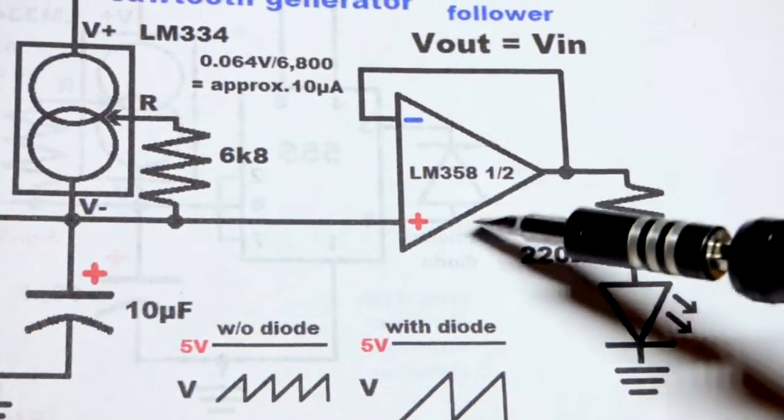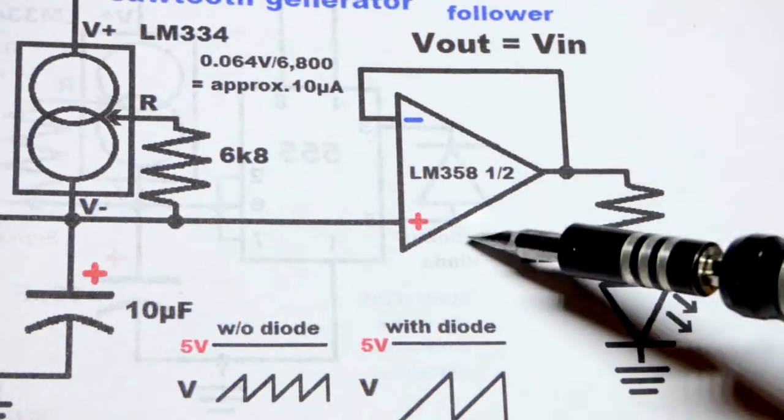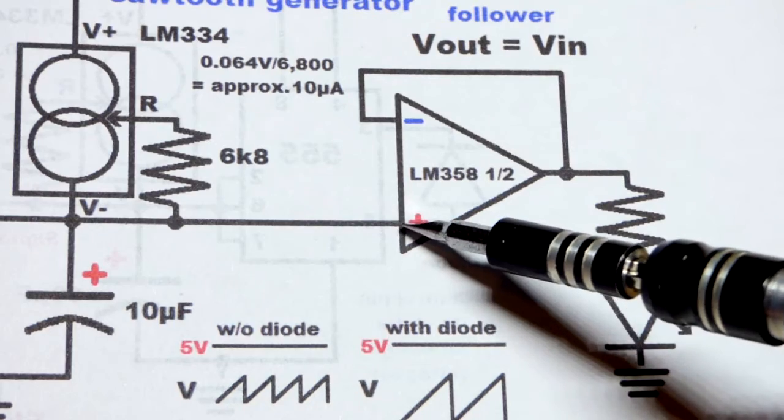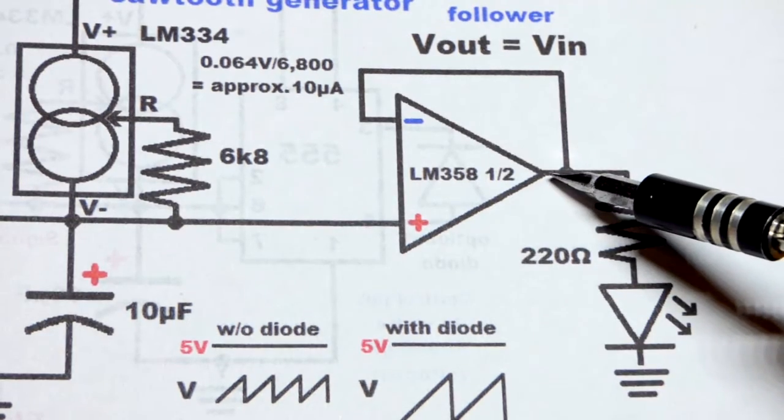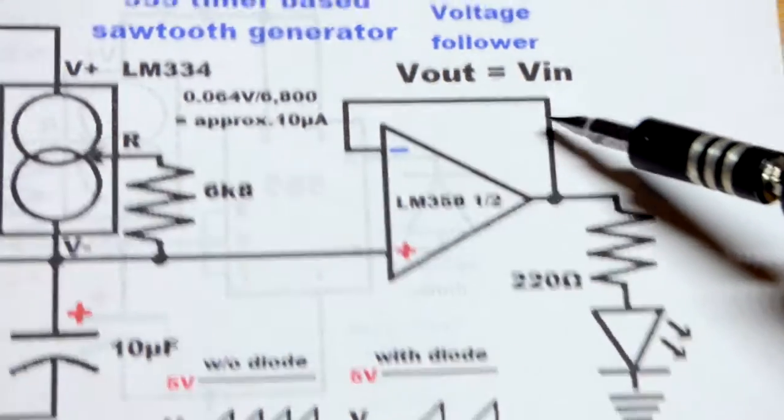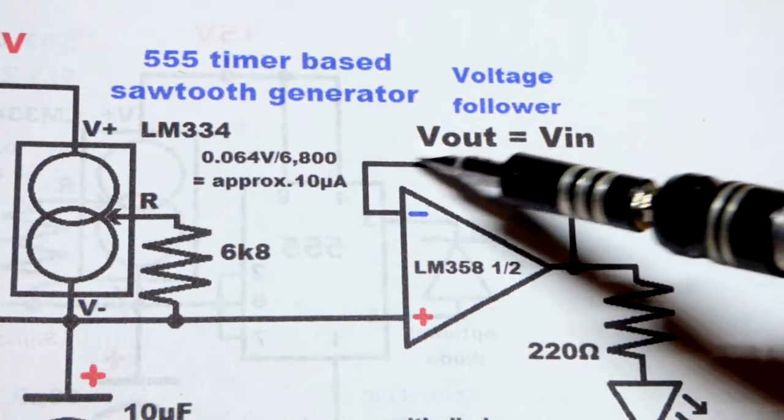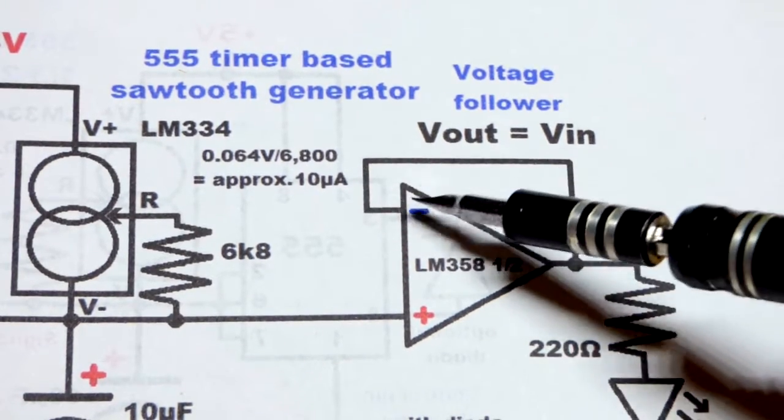So sometimes you'll see that on the schematic, sometimes you won't. You always have to power these integrated circuits. So in any case, we have the signal voltage here. We have the output. This is wired as a voltage follower. So we got a direct connection to the inverting input.